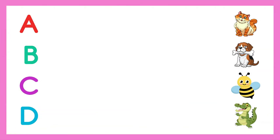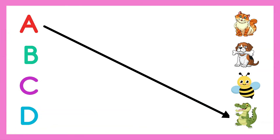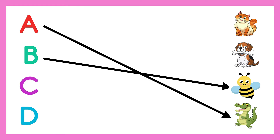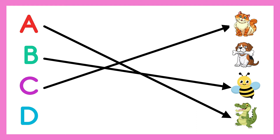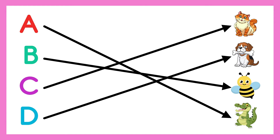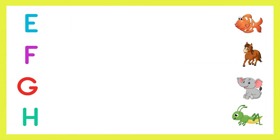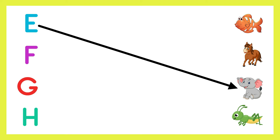A - Alligator. B. C - Cat. D - Dog. E - Elephant.